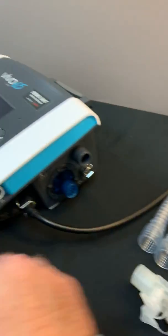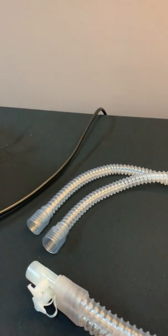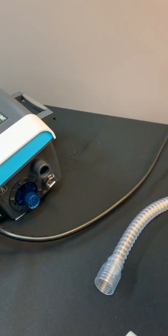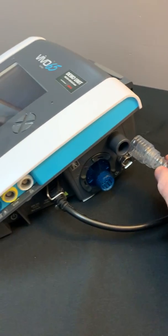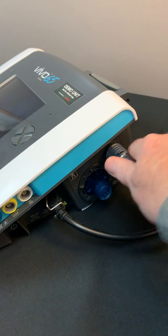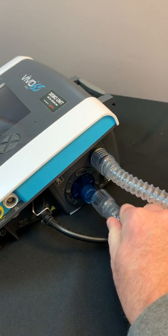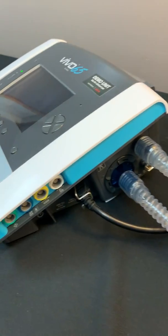As far as the dual limb circuit itself, you can take your inspiratory limb and connect it to the machine. You can then take the expiratory limb and connect that to your exhalation valve.